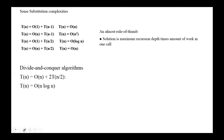Here are some substitution complexities. If T(n) = O(1) + T(n-1), then big O is O(n). If T(n) = O(n) + T(n-1), then T(n) = O(n²). If T(n) = O(n²) + T(n-1), the complexity is O(n³). If T(n) = O(1) + T(n/2), the complexity is O(log n). If T(n) = O(n) + T(n/2), then T(n) = O(n). And for divide-and-conquer algorithms, if T(n) = O(n) + 2T(n/2), then the complexity is O(n log n) — this is merge sort.